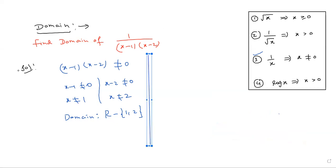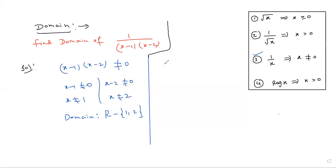This is a 2-mark question type. Generally they ask this model for 2 marks — very important. In annual exams, 95% of the time you can expect a domain or range basic problem. The second question is usually domain or range. Domain and range are compulsory topics.